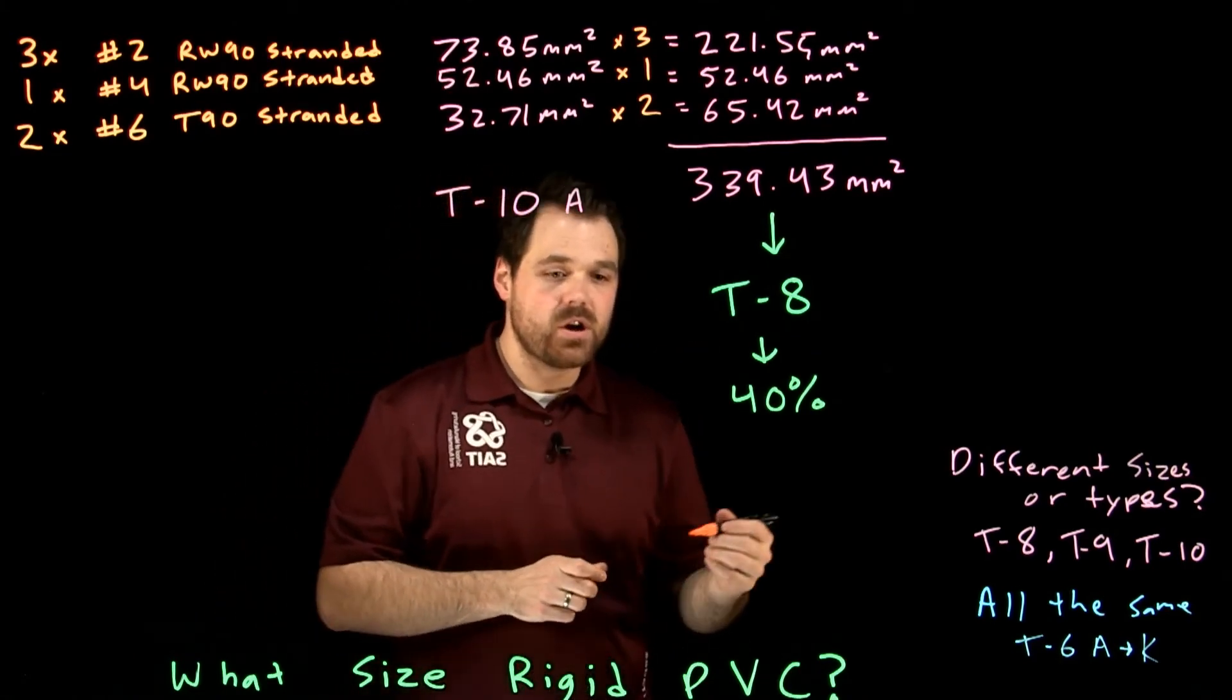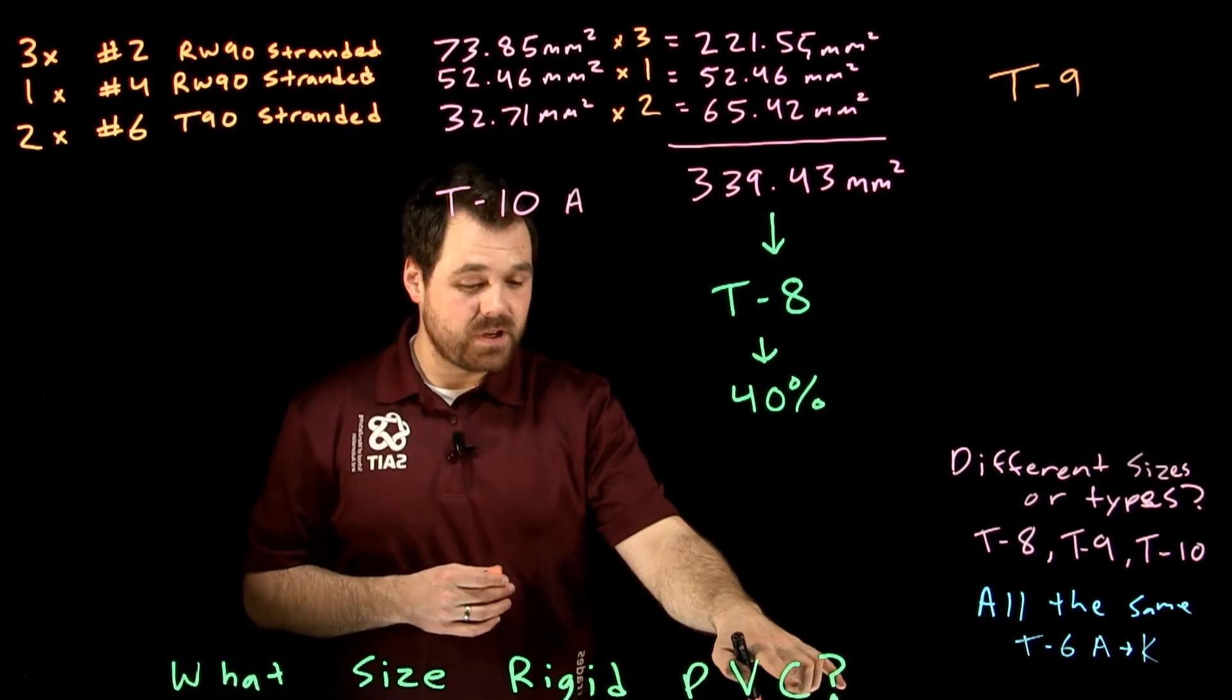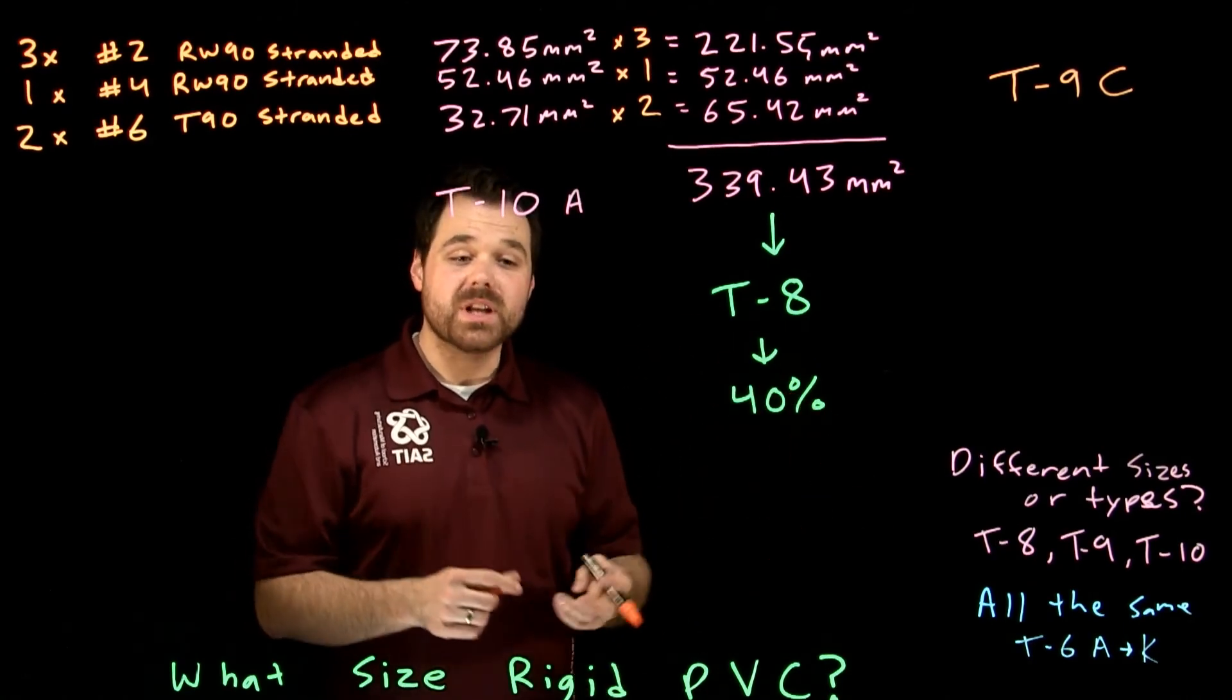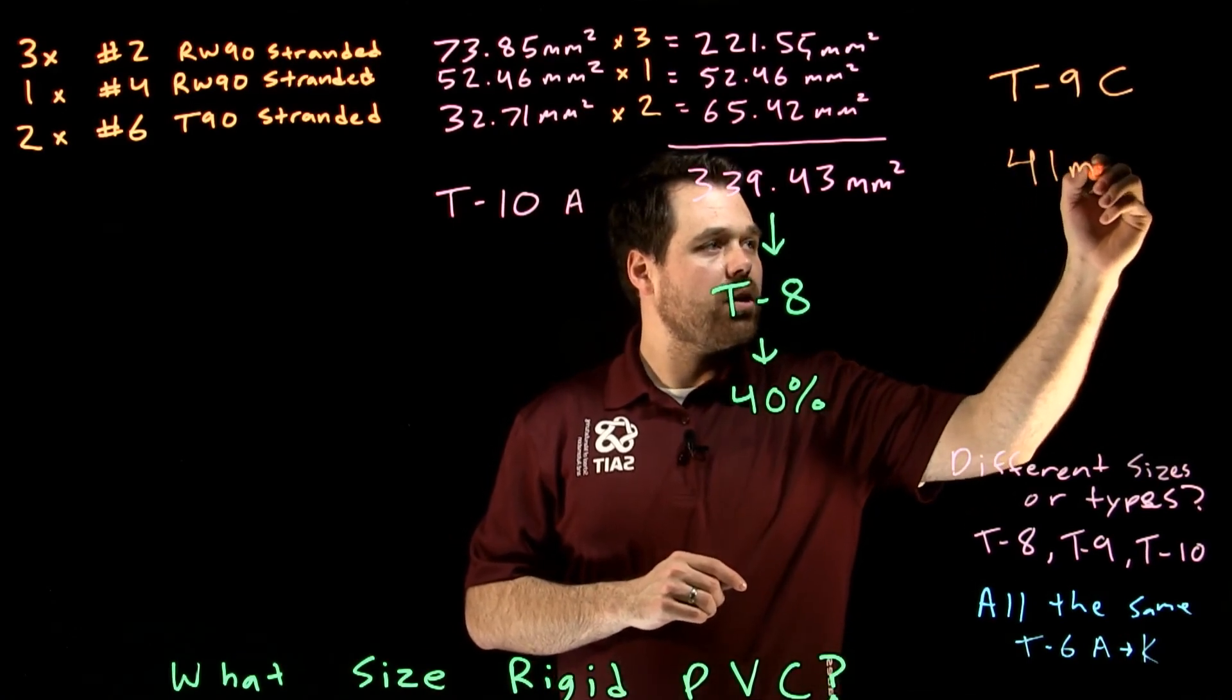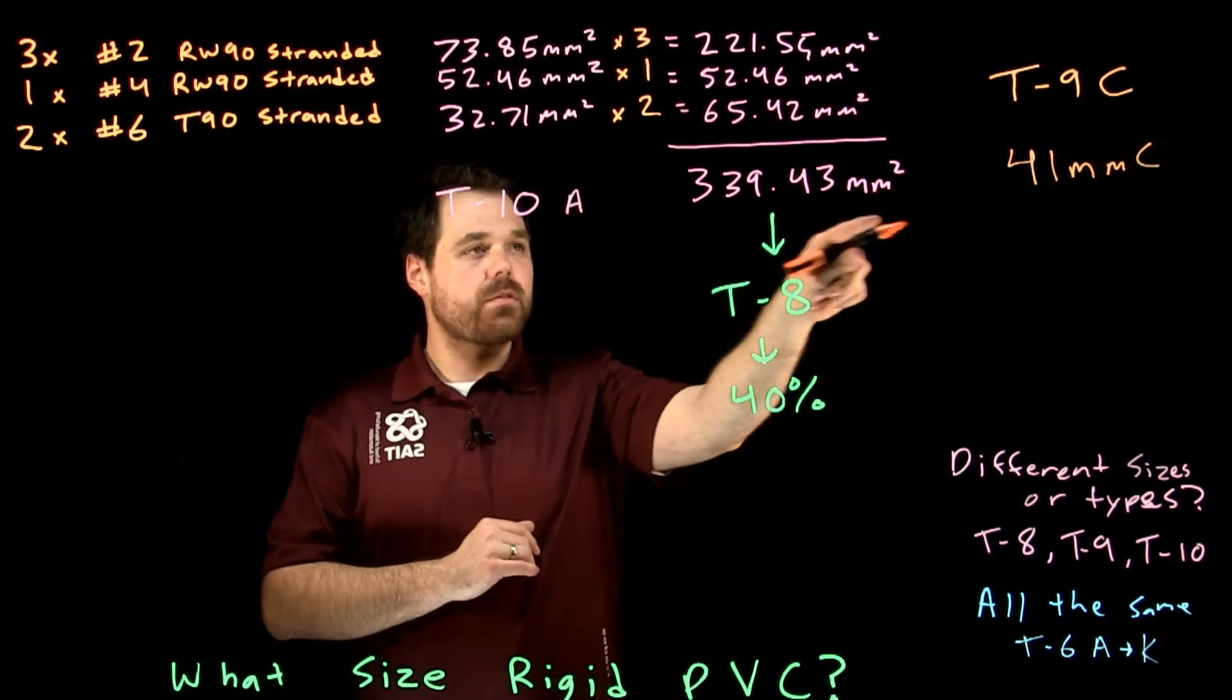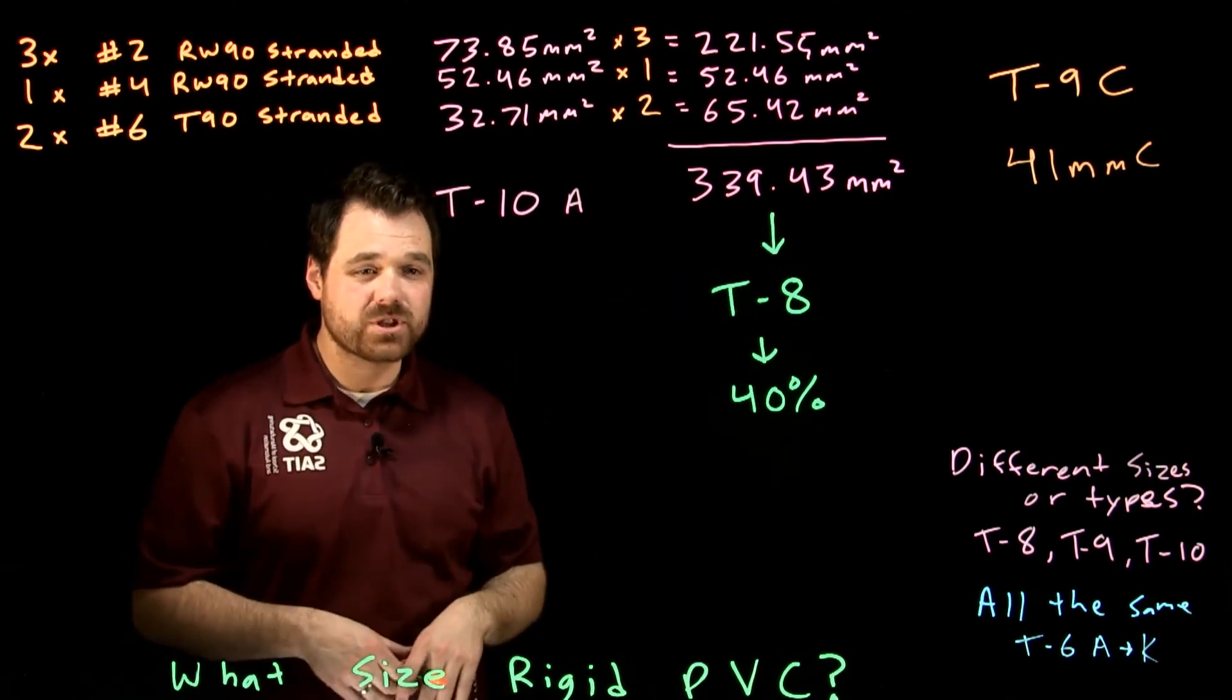Our final stop is we are going to go to table nine. Specifically, because we're looking at for rigid PVC, we're actually going to go to table nine C. Now table nine C talks about rigid PVC. We go to that forty percent column and it tells us we are going to require a forty one millimeter conduit. Forty one millimeter conduit can hold up to four hundred and fifty six millimeters squared. Which means our three hundred and thirty nine millimeters squared is going to fit. If we went to the size below, that wouldn't fit with the forty percent fill.